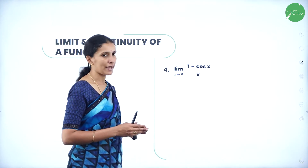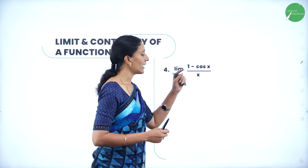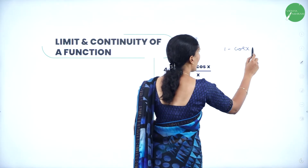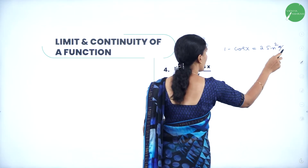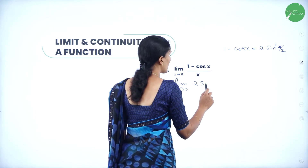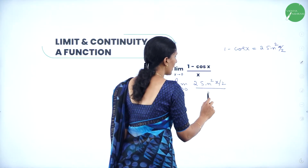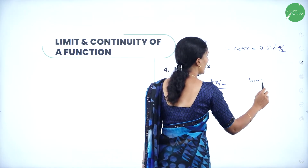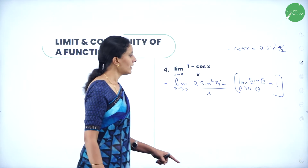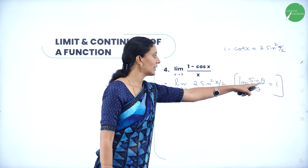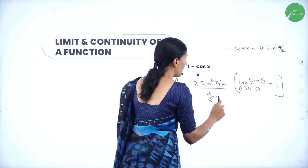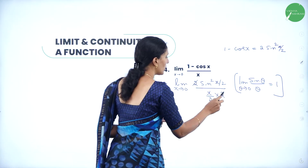Question number 4: limit of (1 − cos x) / x as x tends to 0. Here, using the submultiple angle formula from trigonometry, 1 − cos x can be written as 2 sin²(x/2). So I replace 1 − cos x with 2 sin²(x/2) and the denominator remains x. To get sin θ / θ form with θ = x/2, the denominator should have x/2. So I divide by 2 and multiply by 2 — the 2s cancel.